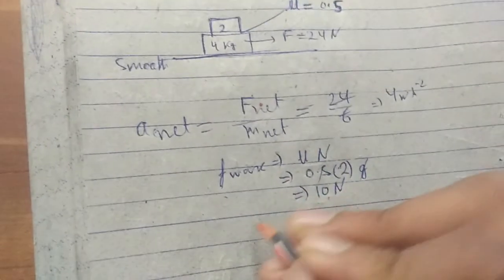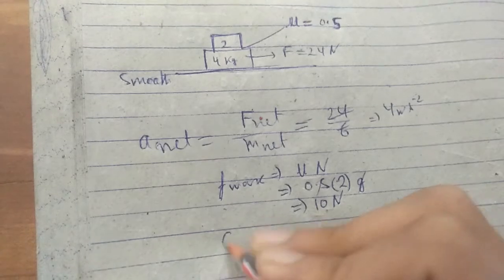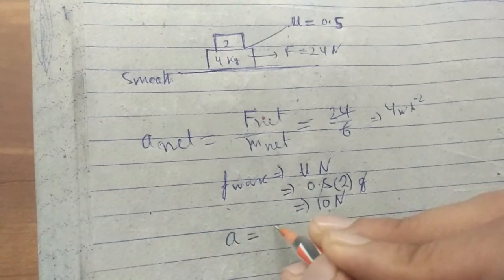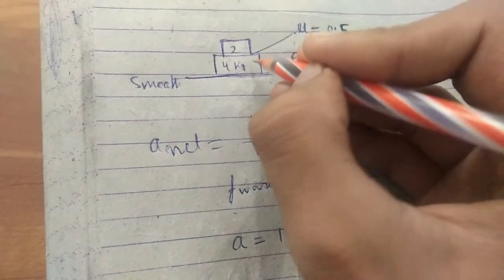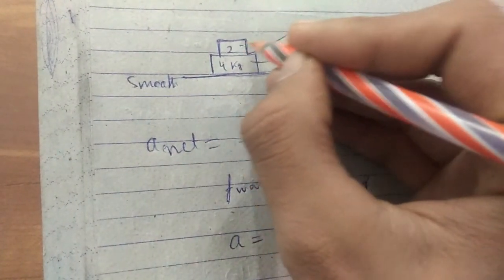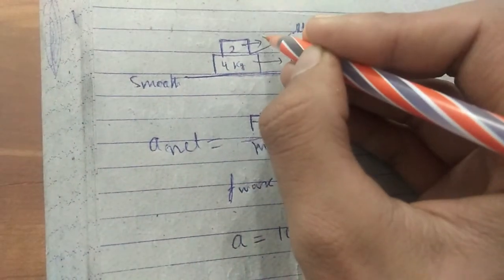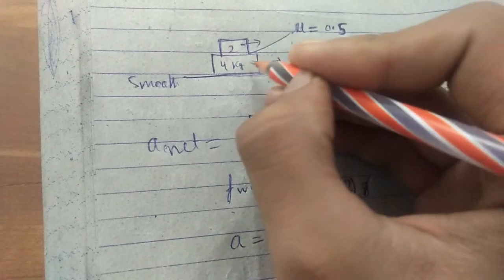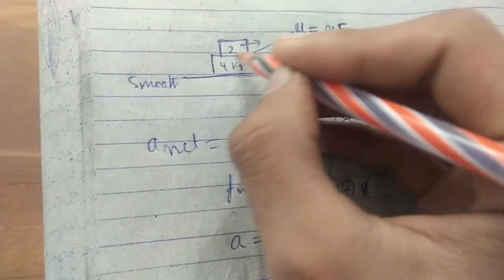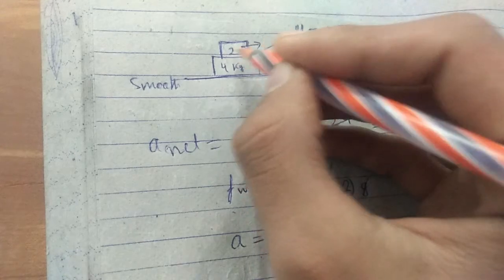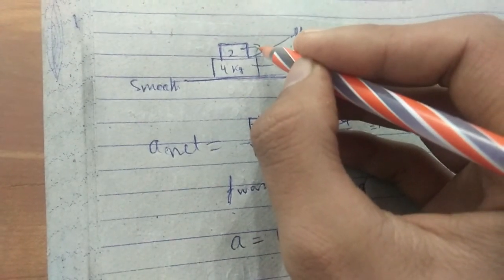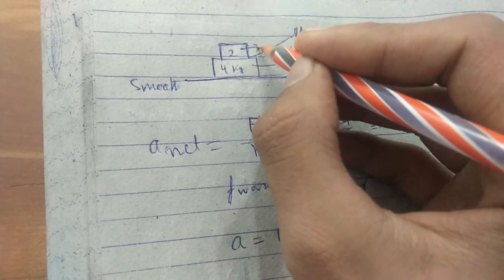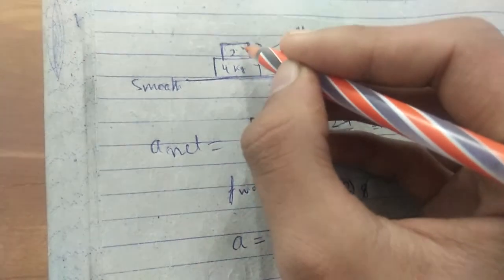So what maximum acceleration can this friction force provide? Maximum F net is 10 N. As only friction force will take this 2 kg block with the 4 kg block, the friction force will make this 2 kg block accelerate.